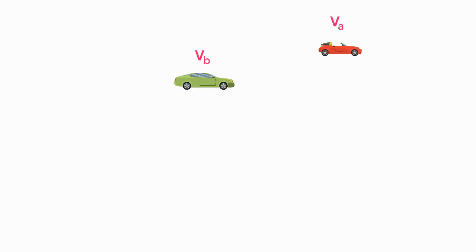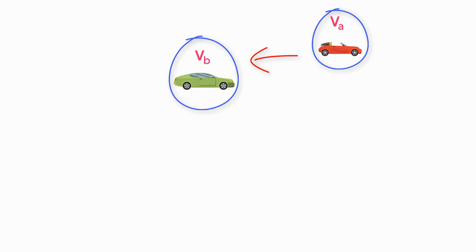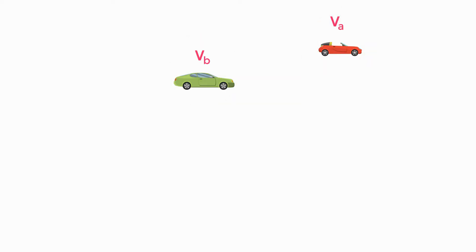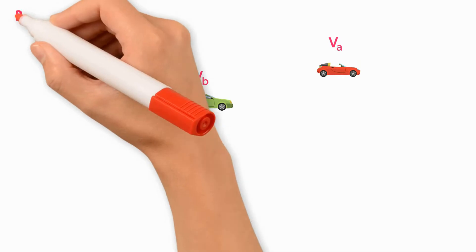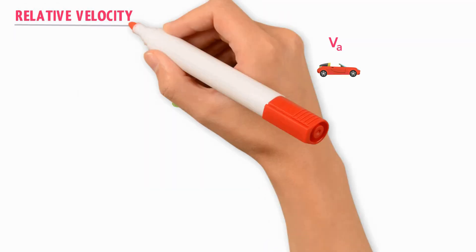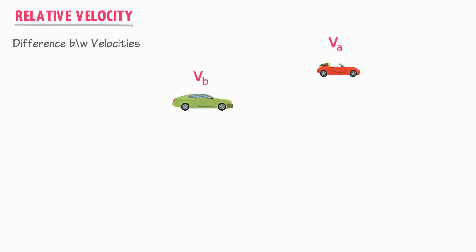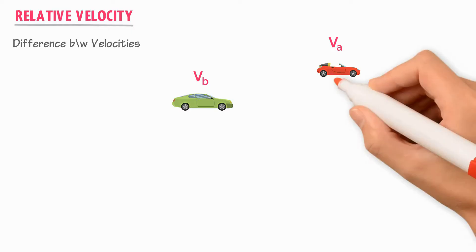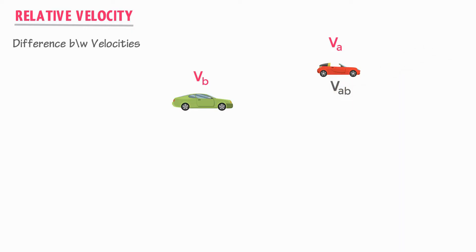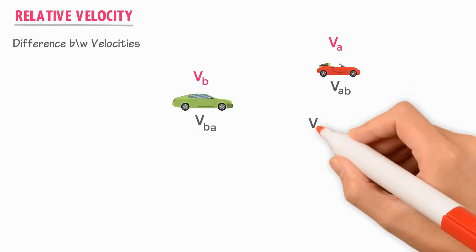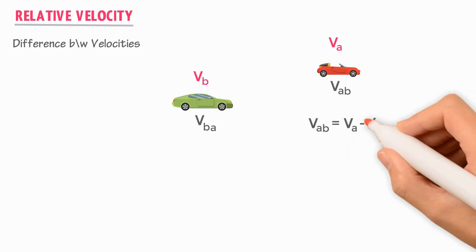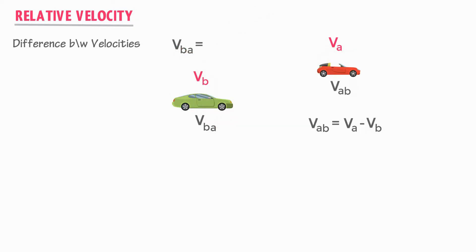Here I am interested to find the velocity of one car with respect to the other car. We already know that both cars are moving. When we find the velocity of one car with respect to another car, we call this velocity the relative velocity. Relative velocity is nothing but the difference of two velocities. The relative velocities may be VAB or VBA.